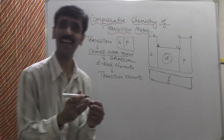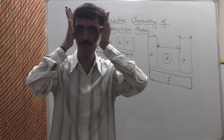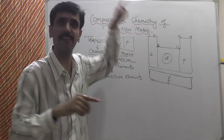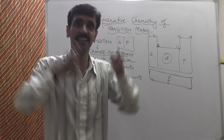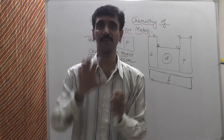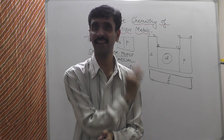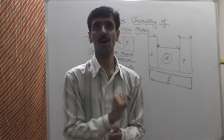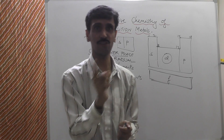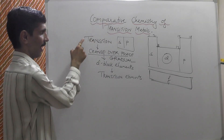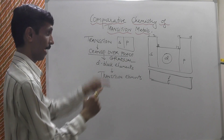Just as in a lecture your entire attention must be centralized on what the teacher is teaching, in this chapter our entire focus is on the d orbitals — the d-block elements. They signify a gradual changeover from metallic to non-metallic character. Transition is a gradual change-over phase, and I hope you have understood this concept well.